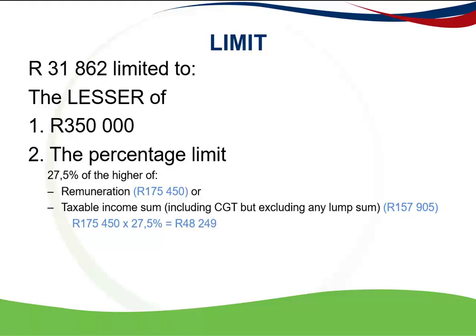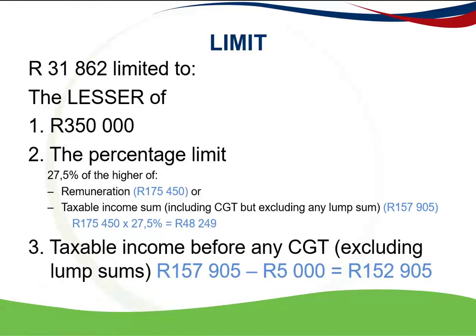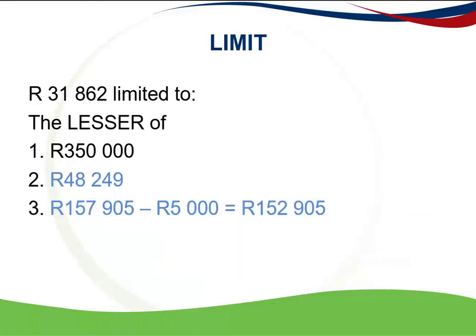The third limit is taxable income before any capital gains. This question didn't have any lump sums, but it did tell us that R5,000 was included in respect of capital gains, so we subtract that to get to the taxable income for the third limitation.